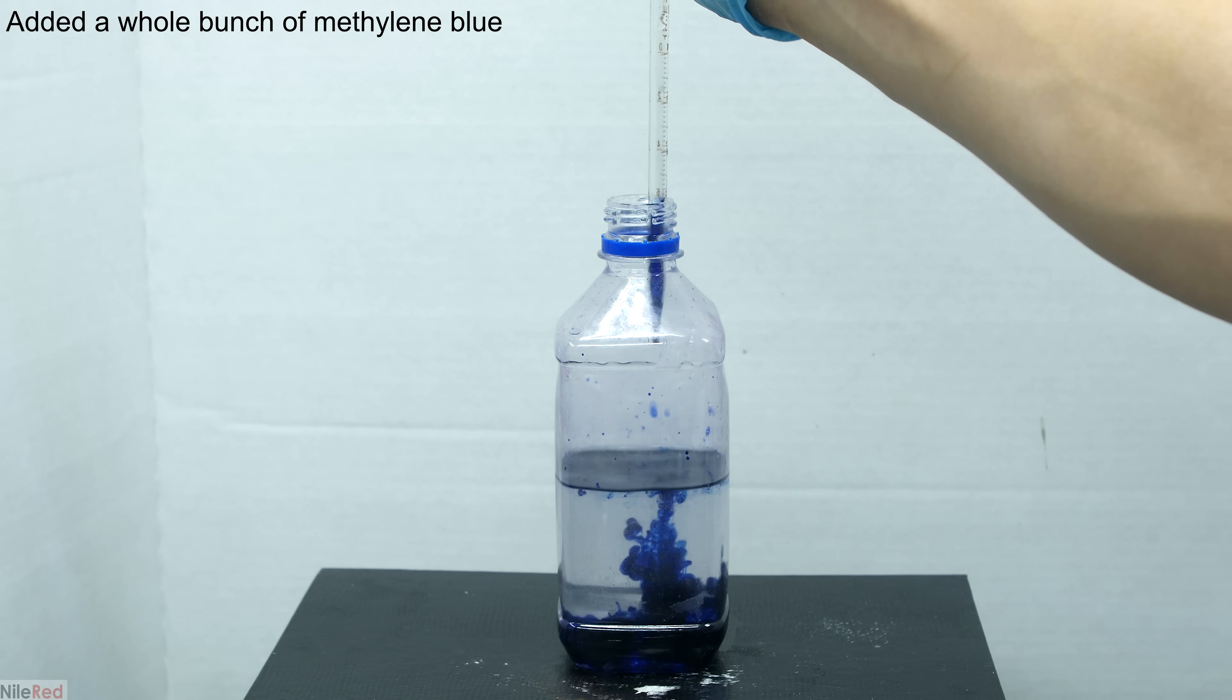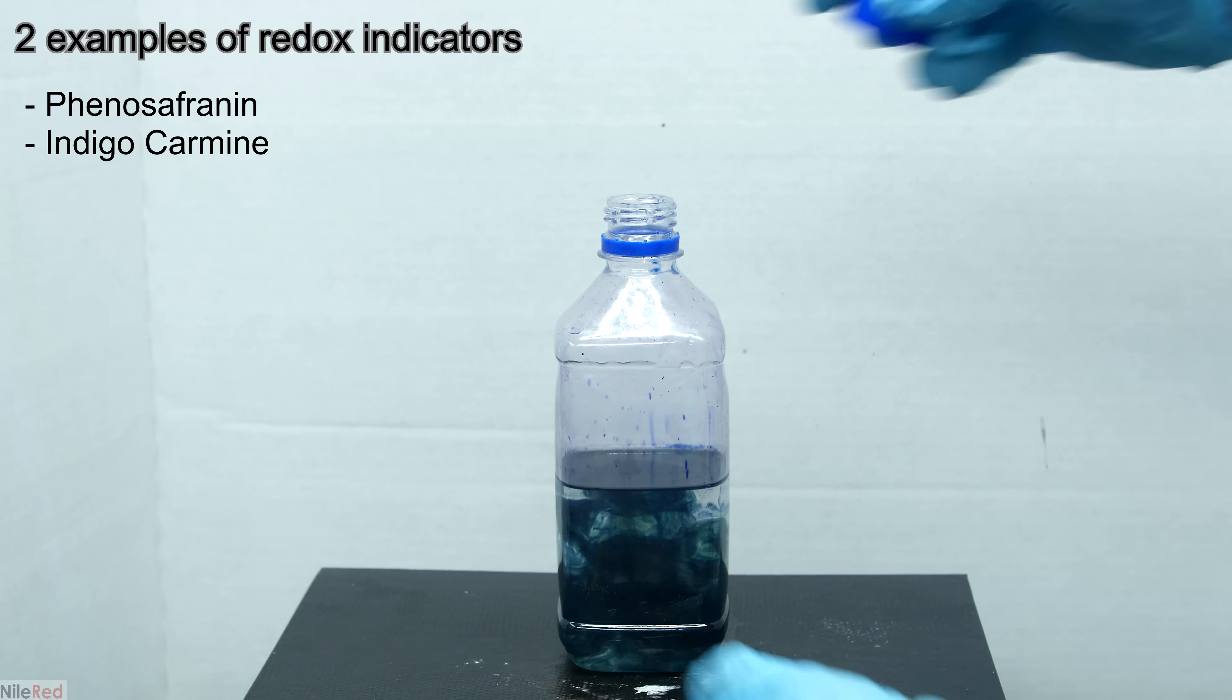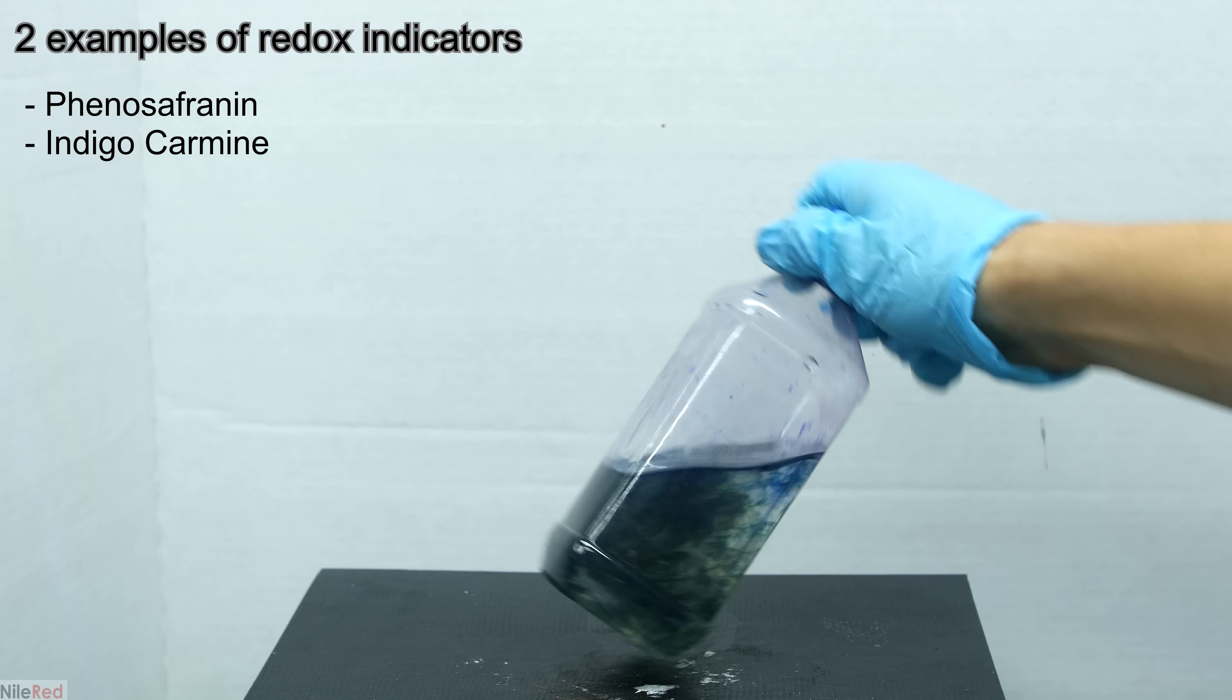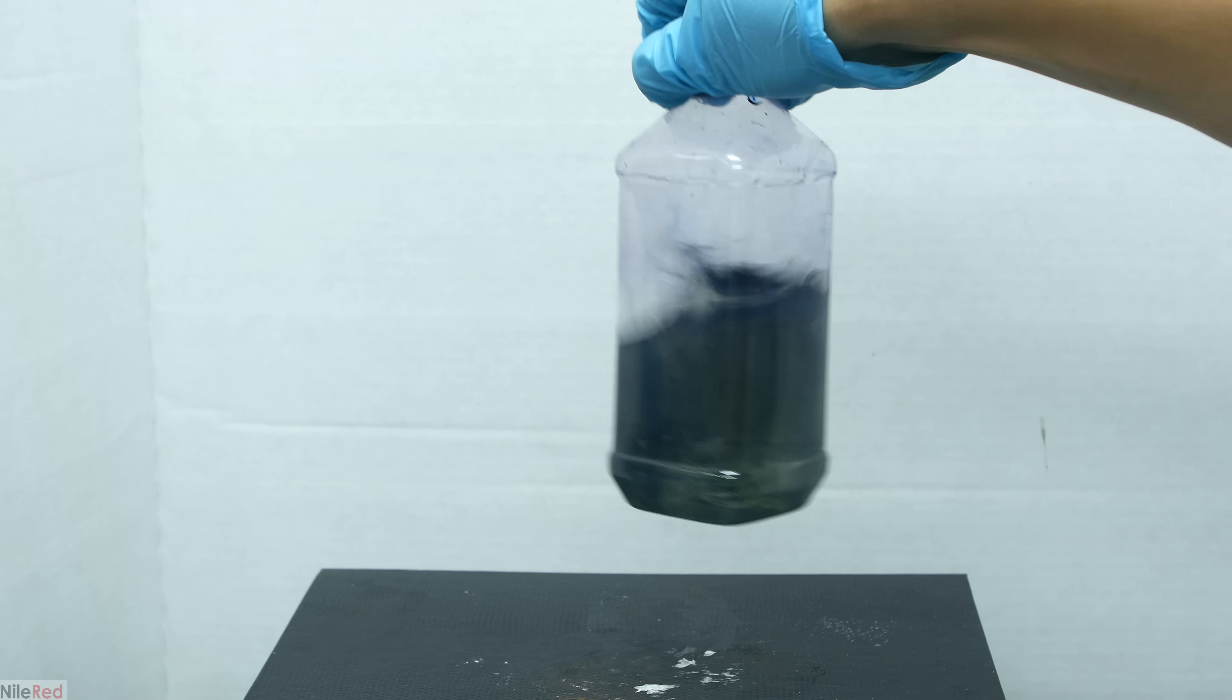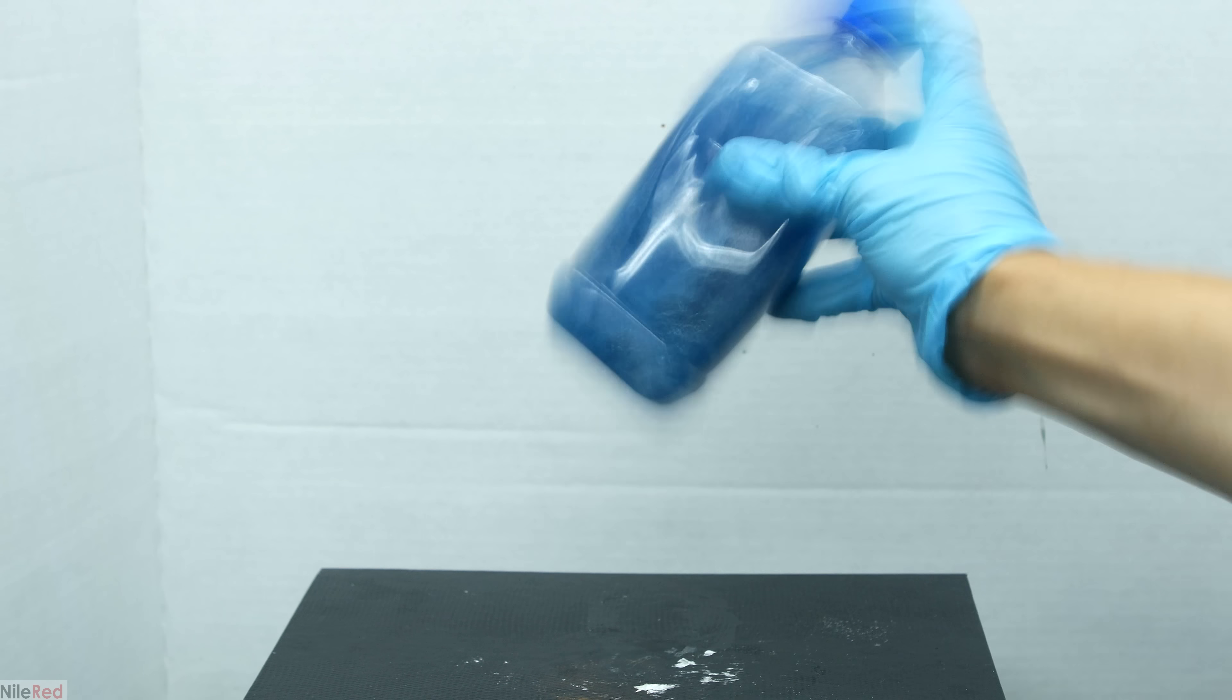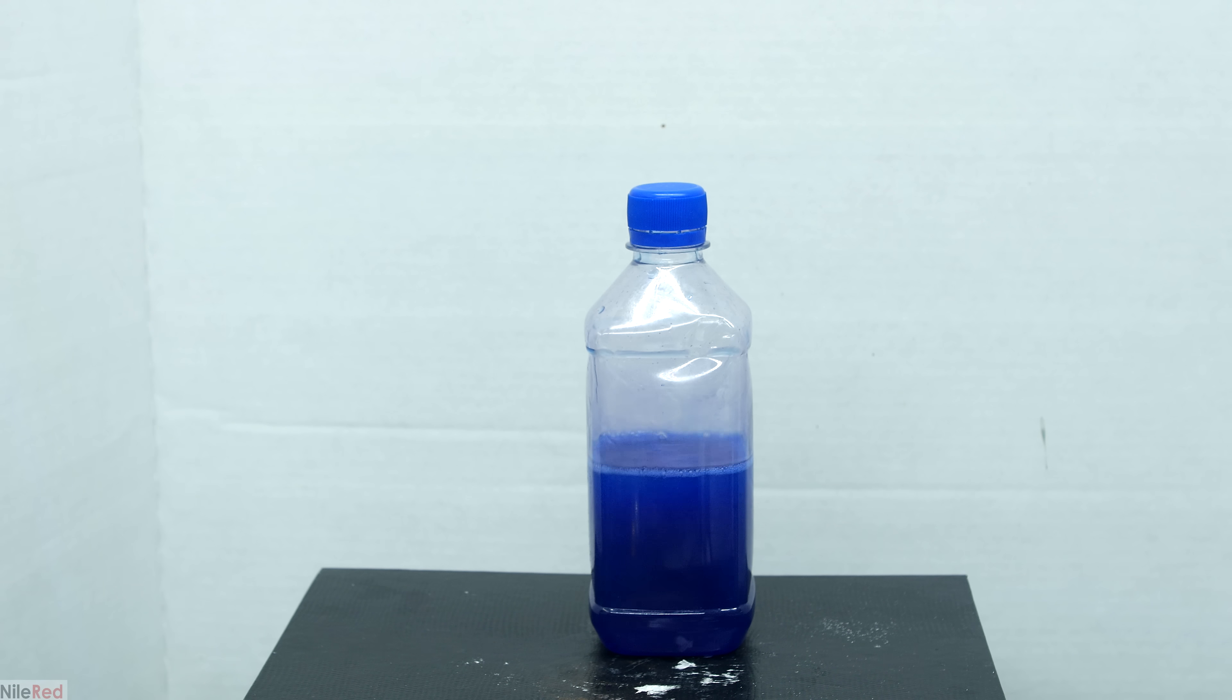Methylene blue isn't the only indicator that can be used in this type of demonstration and we can also use other redox indicators. All we really need is another indicator that changes its appearance depending on its oxidation state. On top of this we don't need to use glucose and potassium hydroxide as our reducing solution, we can also use something else that's capable of carrying out a reduction reaction.